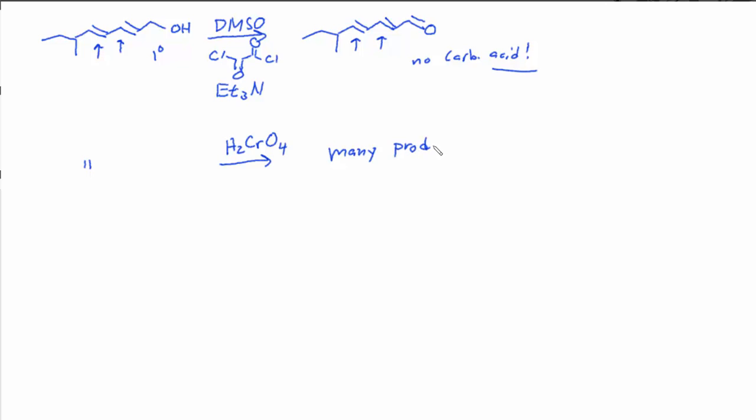Certainly the carboxylic acid would be a product. We could also hydrate, add water across one or both of these double bonds, and end up with a couple of different types of alcohols. So we'd get a whole mess of things. Whereas with the Swern oxidation, we have a nice, well-controlled, mild reaction.